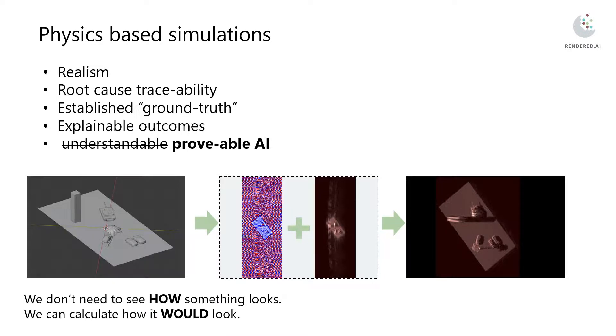From that root-cause traceability, we can really understand our ground truth and what is in the image, which allows us to achieve explainable outcomes in our data generation, ultimately getting us towards provable artificial intelligence.